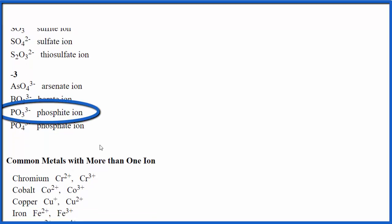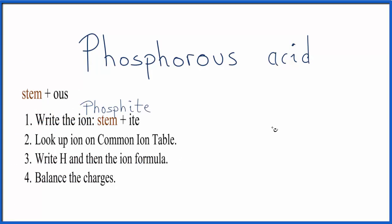Remember that, and we'll go back to our table, and we'll write PO3 3-. So there's our phosphite ion, and now we'll write H in front of the ion.